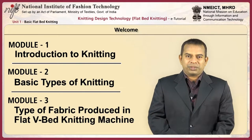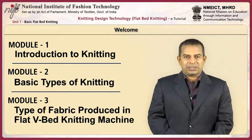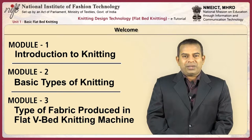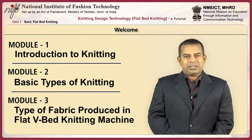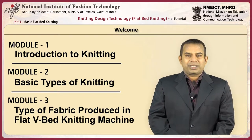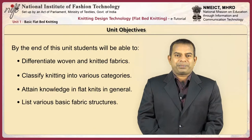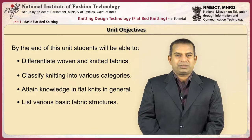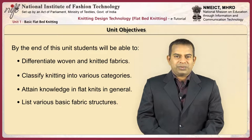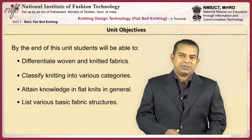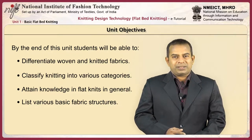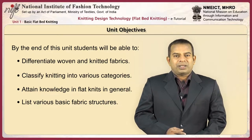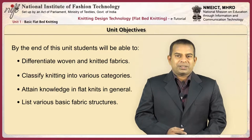This course comprises of four units and a final review session that invites you to reflect on what you have learned. The first unit introduces you to machine knitting. This unit comprises of three modules. By the end of this unit, students will be able to differentiate woven and knitted fabrics, classify knitting in various categories, attain knowledge in flatknits in general, and list various fabric structures.